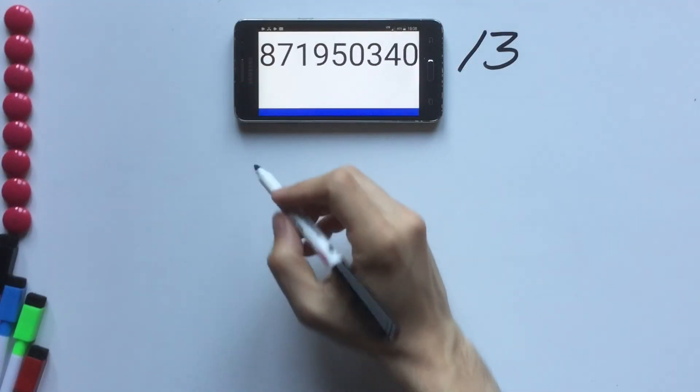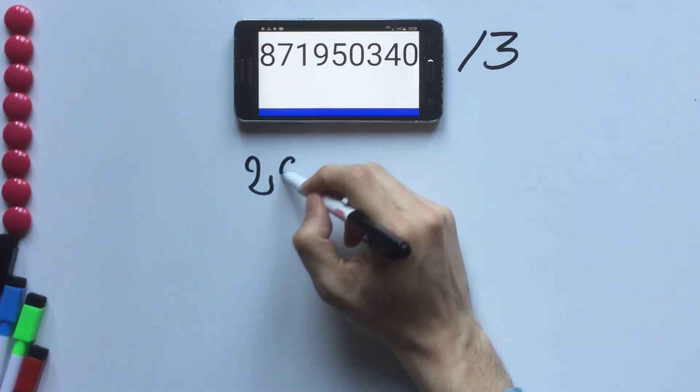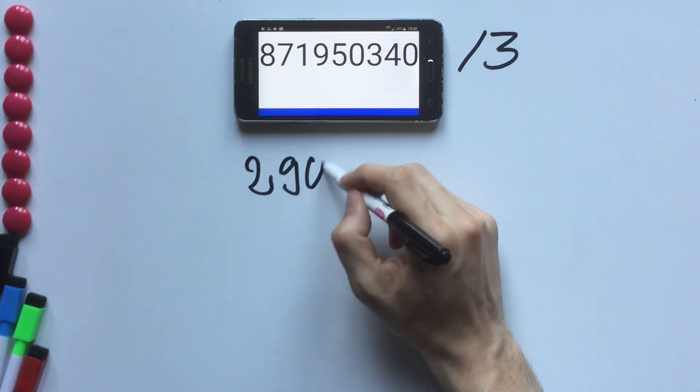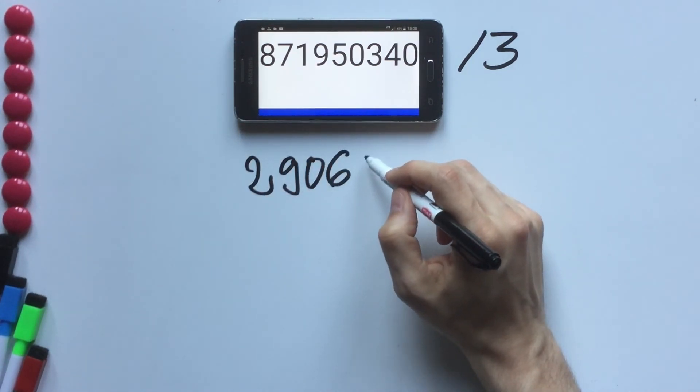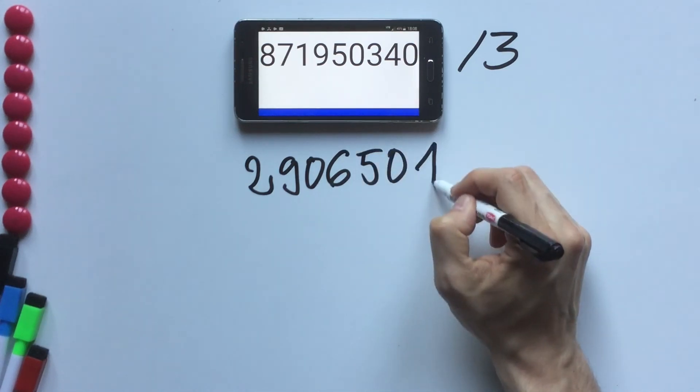Let me conclude by showing you this method in practice. Once again, I'm using Google Random Number Generator to generate two big numbers and immediately divide them by 3 on the whiteboard.